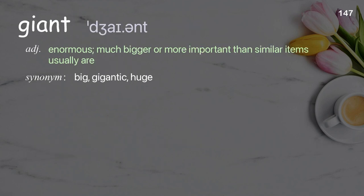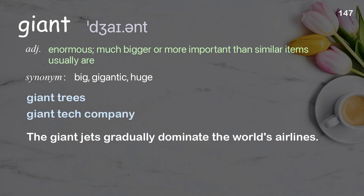Giant: Extremely big, much bigger or more important than similar items usually are. Examples: Giant trees, Giant tech company. The giant jets that gradually dominate the world's airlines.